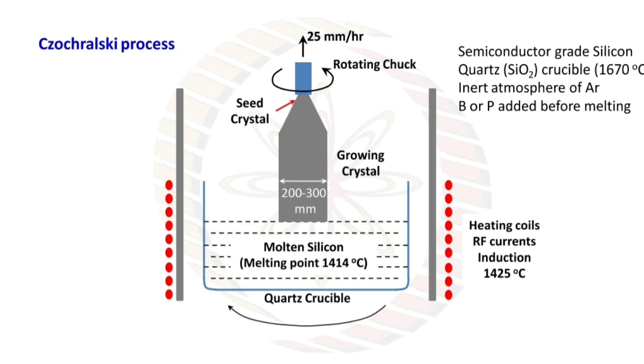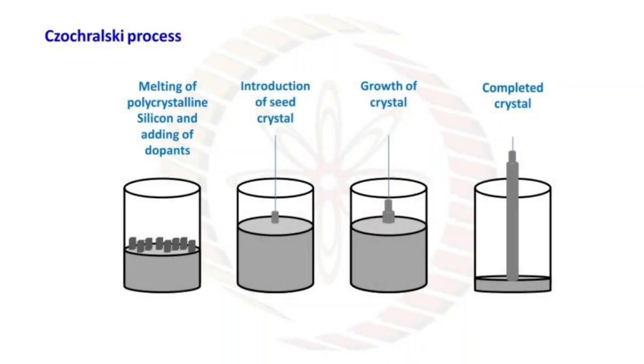On the top of base there is 25 mm per hour speed rotating chuck, and below that growing crystal, and below that molten silicon. Heating coils use RF currents induction at 1,425 degrees Celsius. We have to grow a single crystal by Czochralski process: melting of polycrystalline silicon and adding of dopants, introduction of seed crystal, growth of crystal, and then completed crystal. By Czochralski process we construct a single crystal.